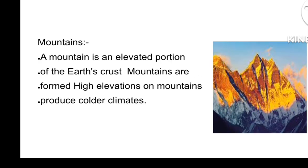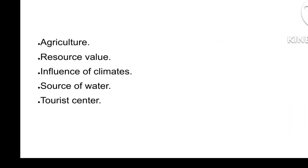Let's see more about the mountains. A mountain is an elevated portion of the earth's crust. Mountains are formed at high elevations, which produce colder climates. The importance of mountains includes agriculture, resource value, influence of climates, sources of water, and tourist centers.